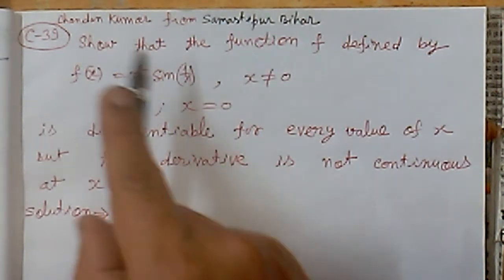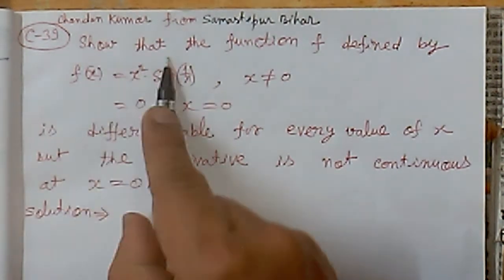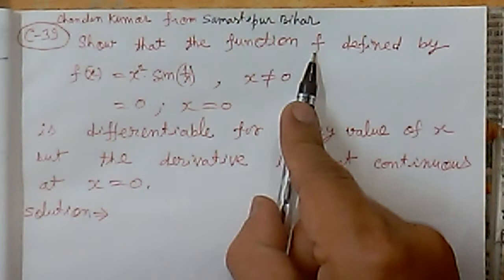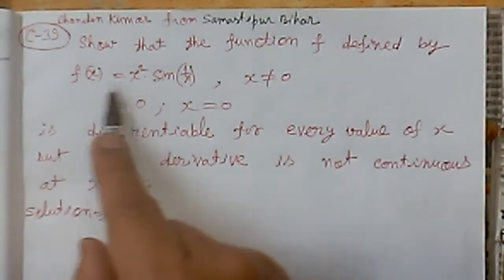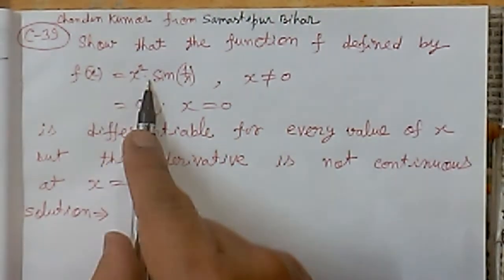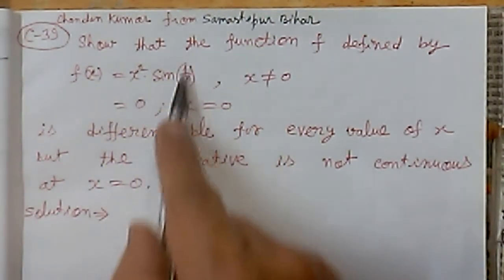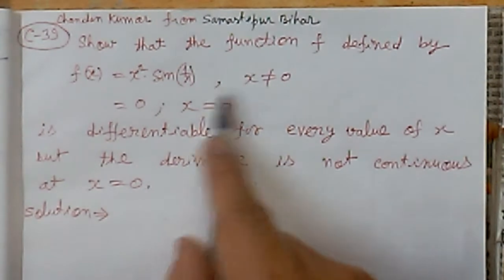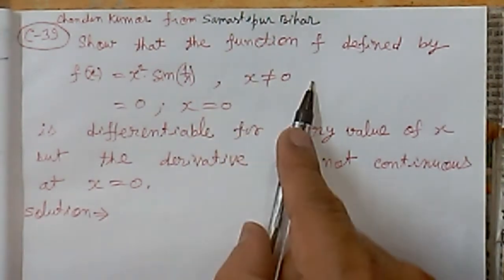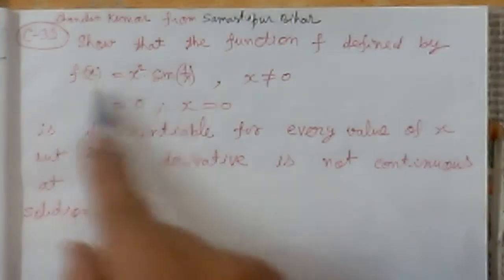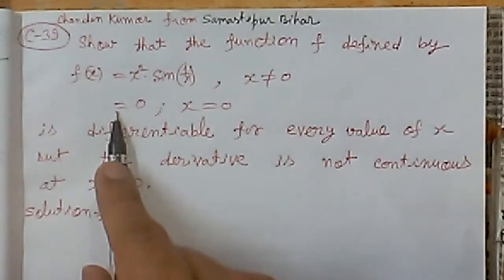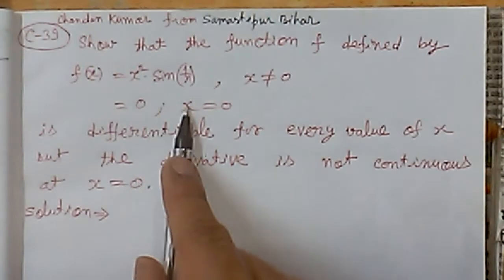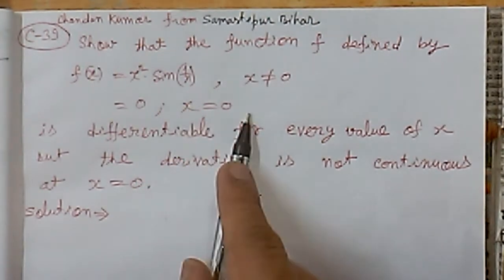The problem is: show that the function f defined by f(x) = x²·sin(1/x) when x ≠ 0, and f(x) = 0 when x = 0.